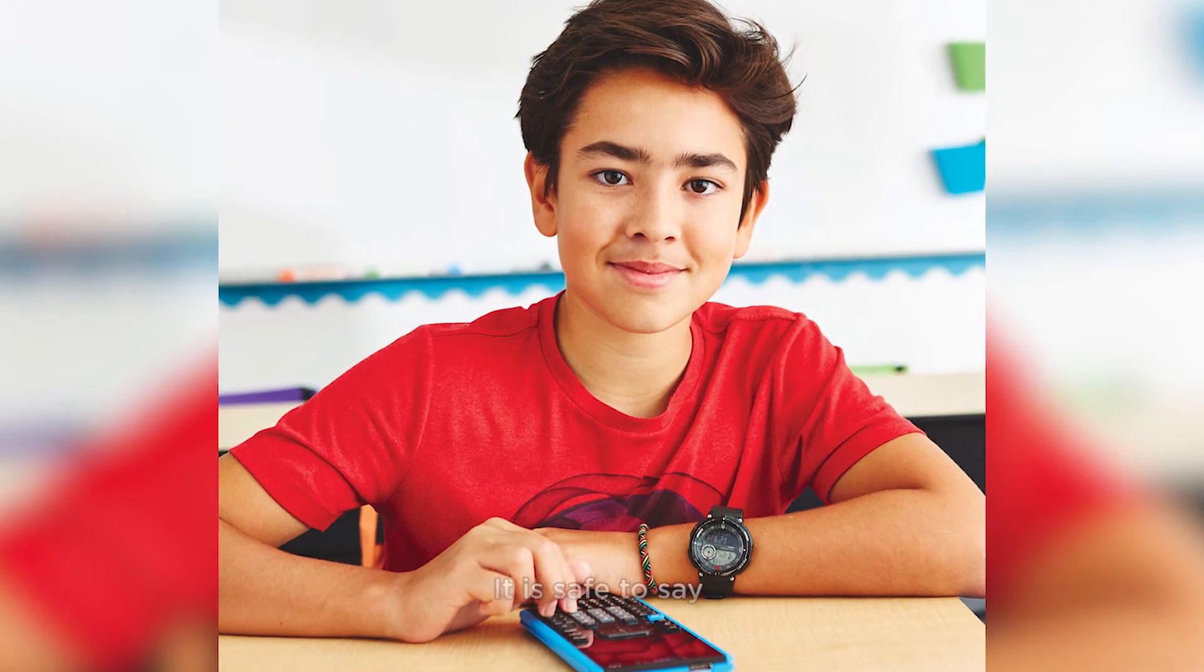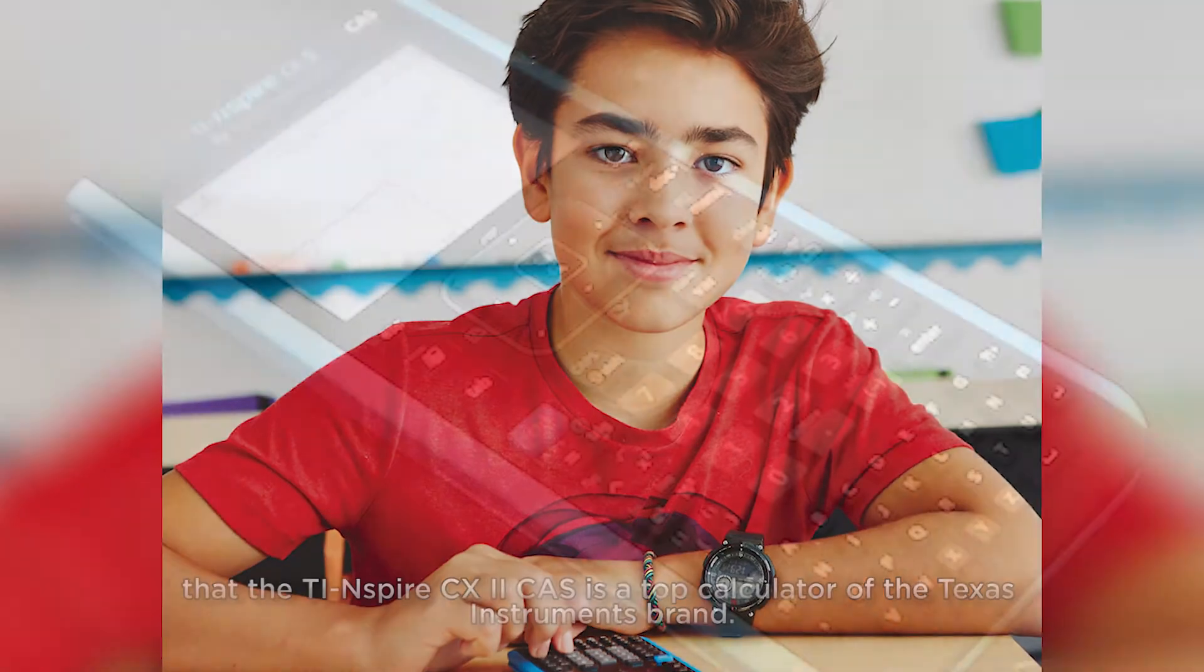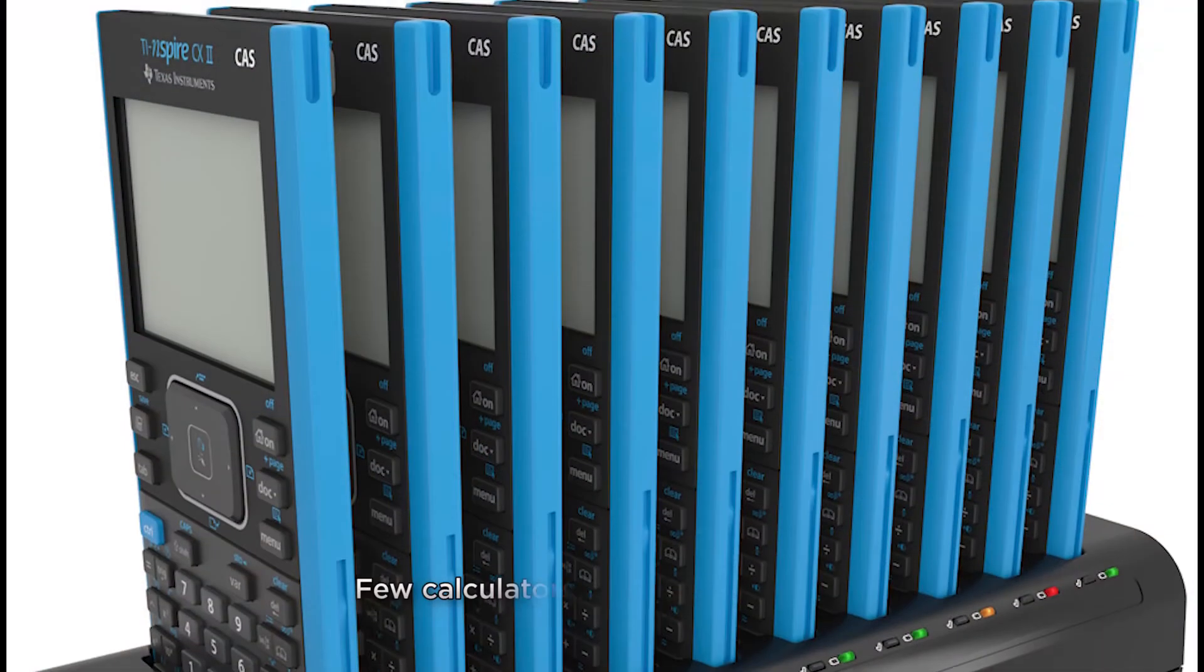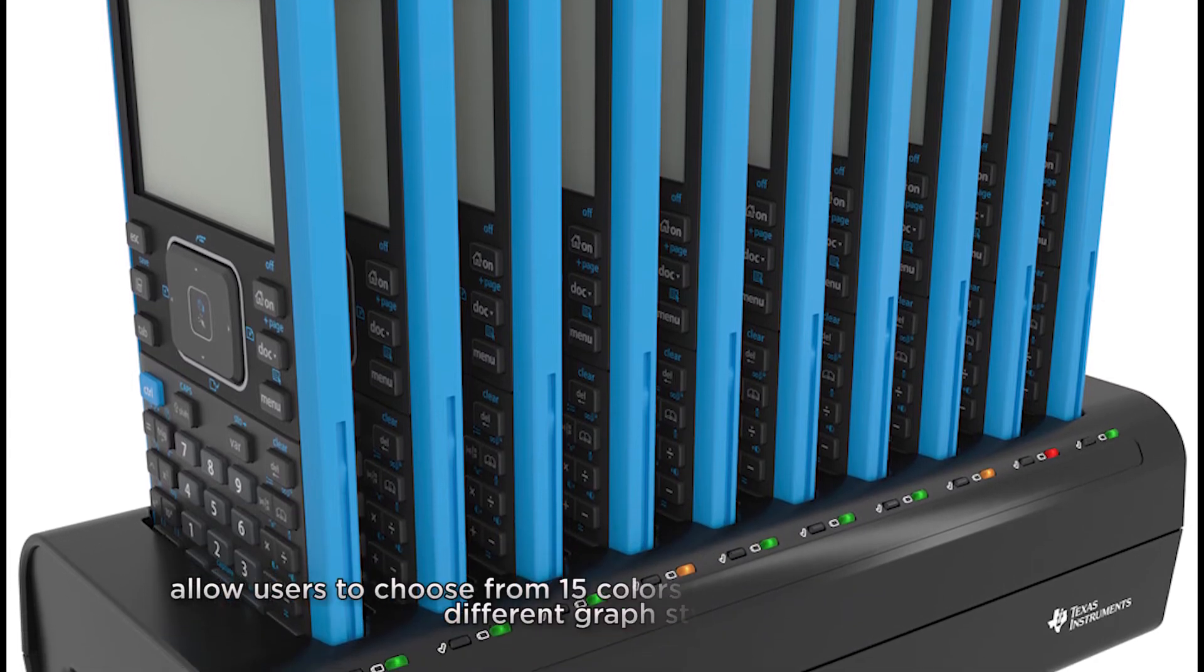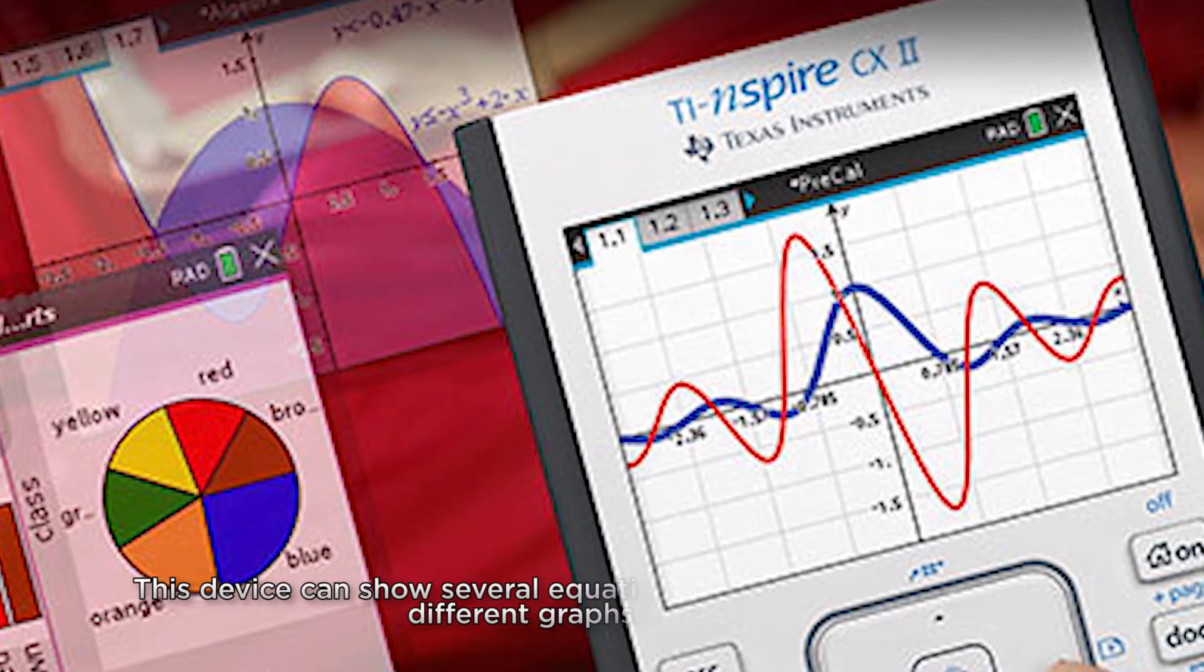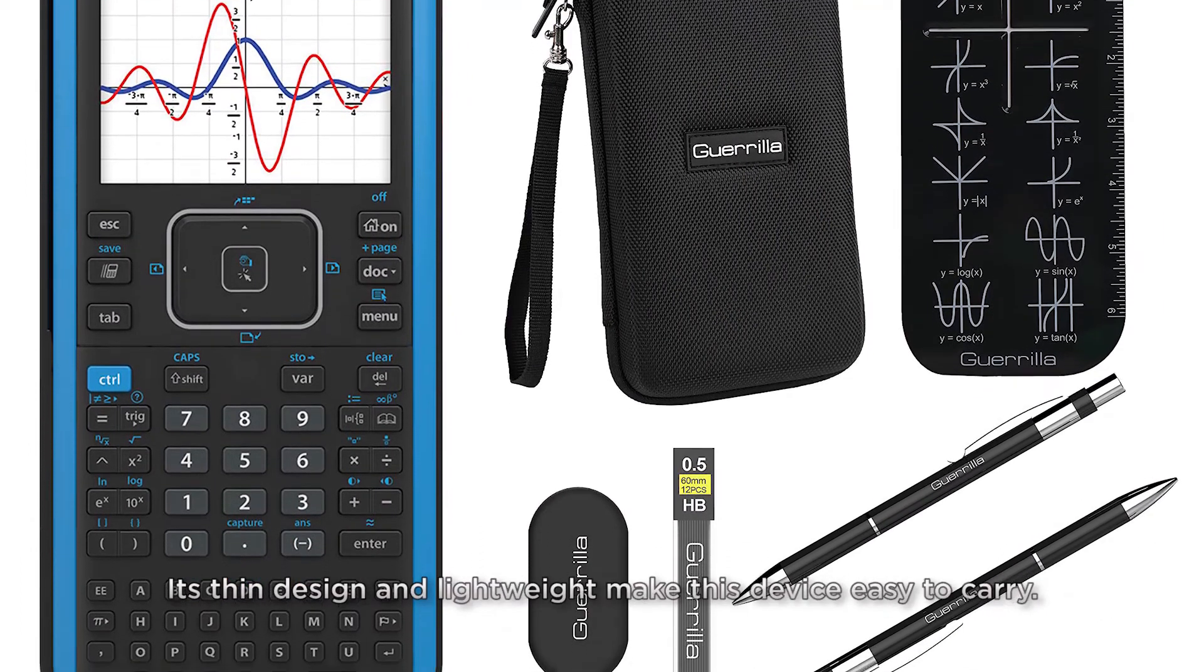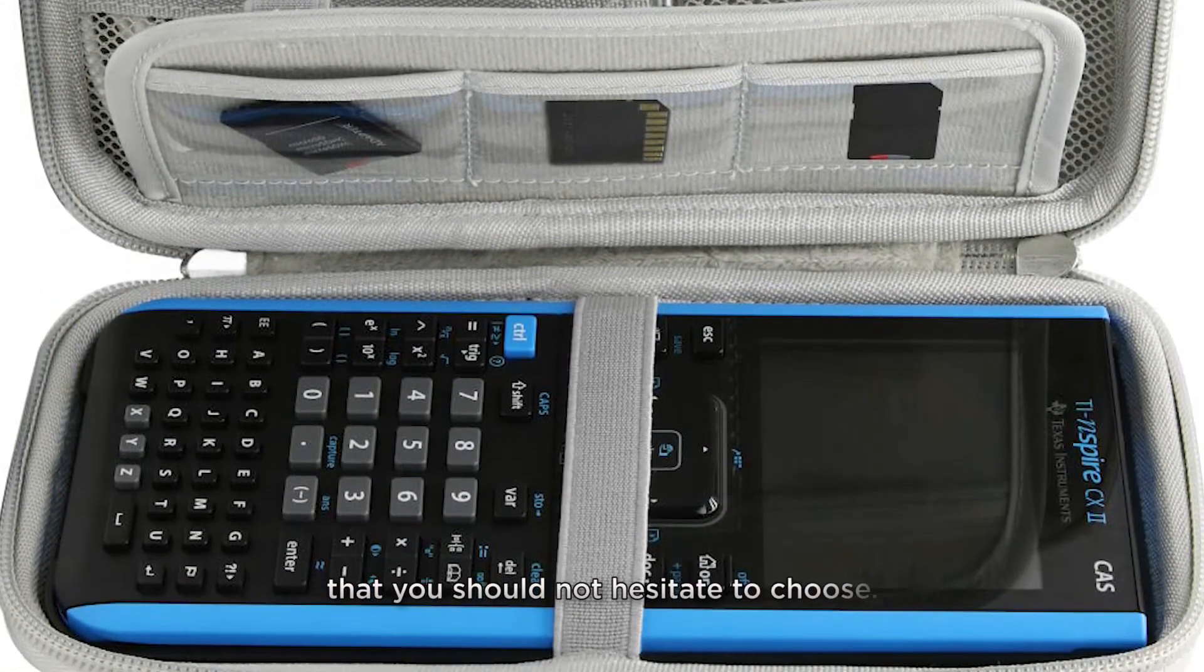It is safe to say that the TI Inspire CX2 Cas is a top calculator of the Texas Instruments brand. It has a rechargeable battery that can last up to two weeks on a full charge, and this is an amazing feature. Few calculators can be found that, like the TI Inspire CX2 Cas, allow users to choose from 15 colors for their graphs with six different graph styles. This device can show several equations at the same time and draw different graphs and tables. Its thin design and lightweight make this device easy to carry. The TI Inspire CX2 Cas is a great calculator that you should not hesitate to choose.